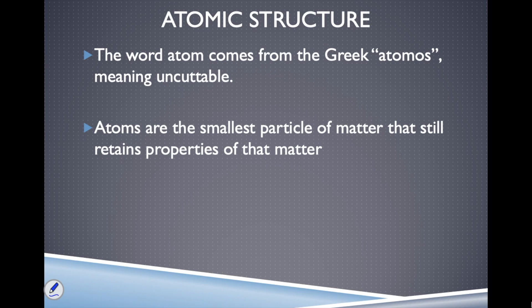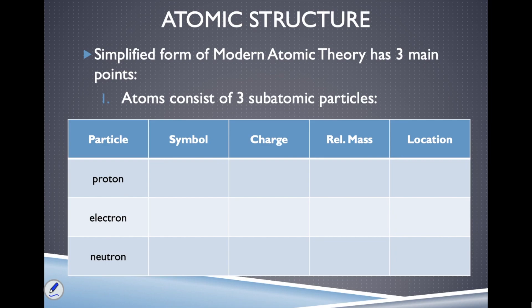In fact, there are things inside atoms that we call subatomic particles. All atoms have within them protons, neutrons, and electrons — three subatomic particles that are found within the atom.